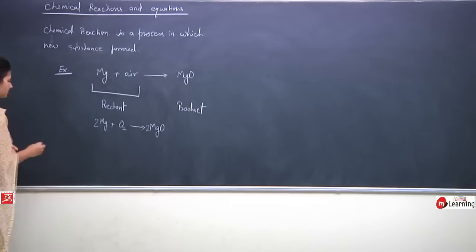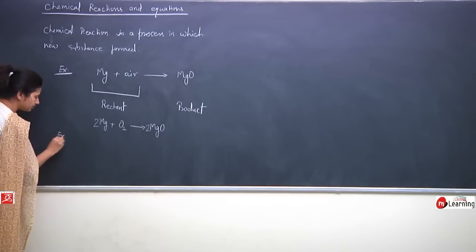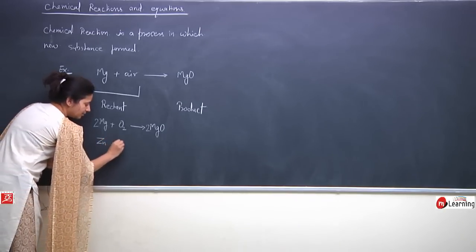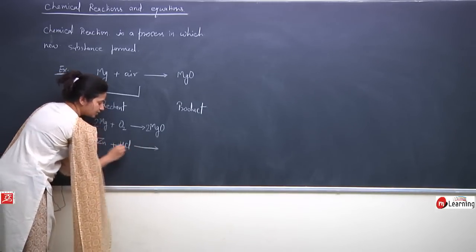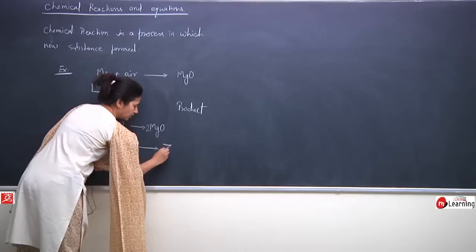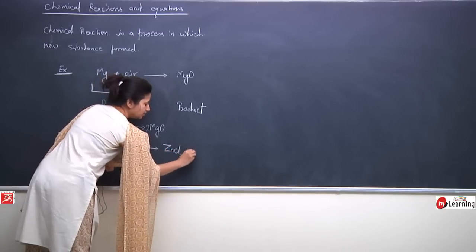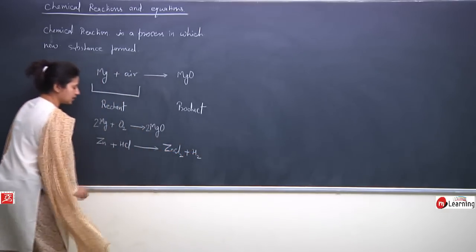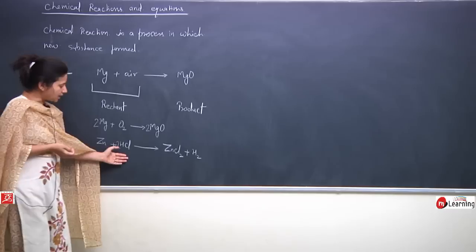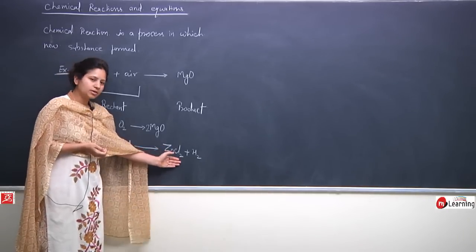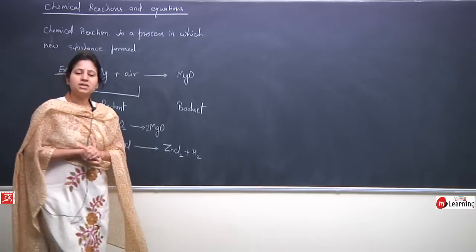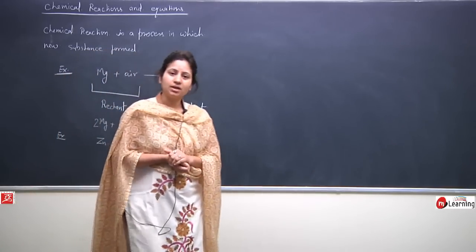Now let's talk about the second example. Suppose you dissolve zinc granules in HCl — hydrochloric acid. Zinc chloride will form, and along with it hydrogen gas is released. This is the reactant; they are rearranged and combined into zinc chloride and release hydrogen gas.